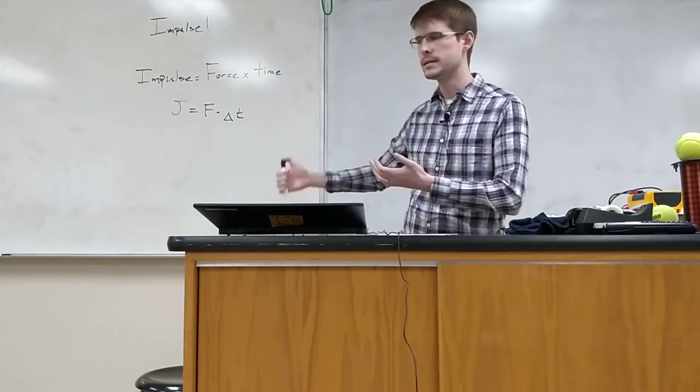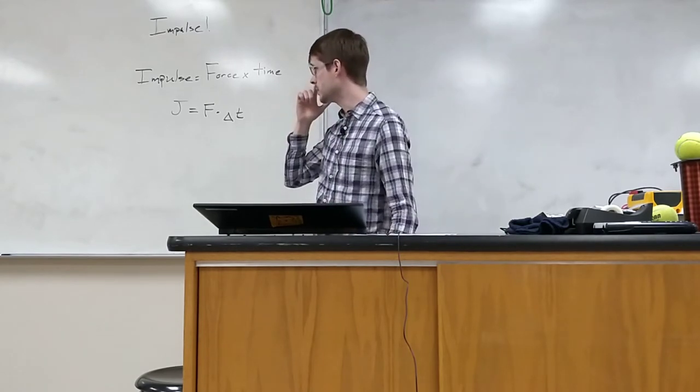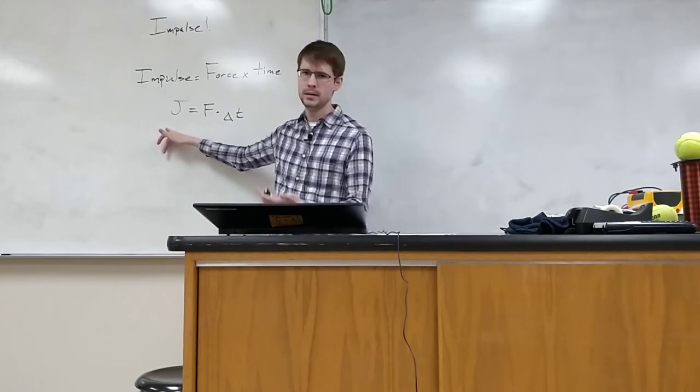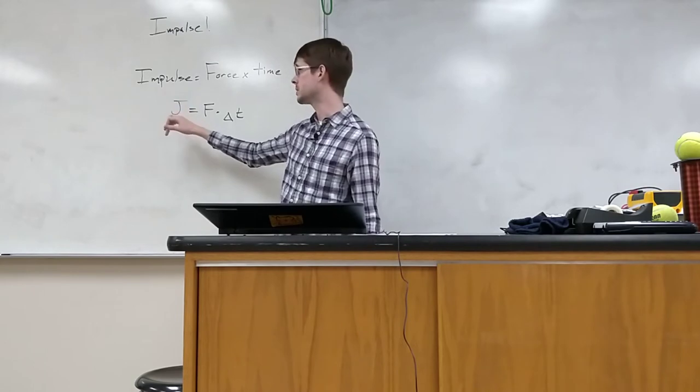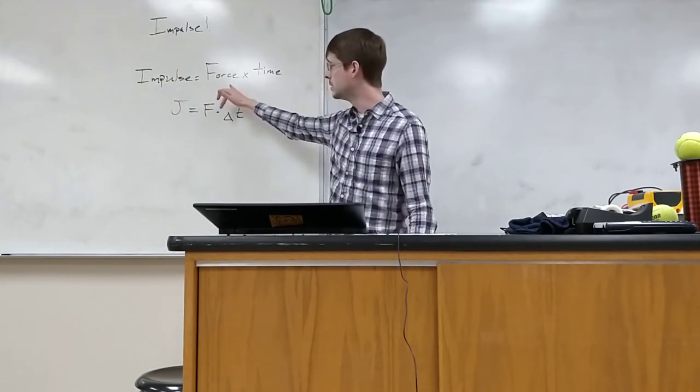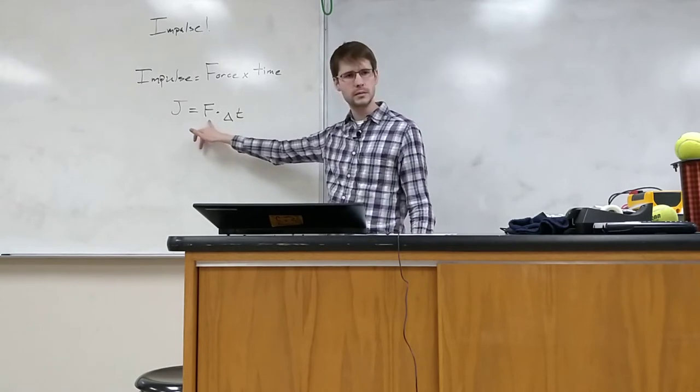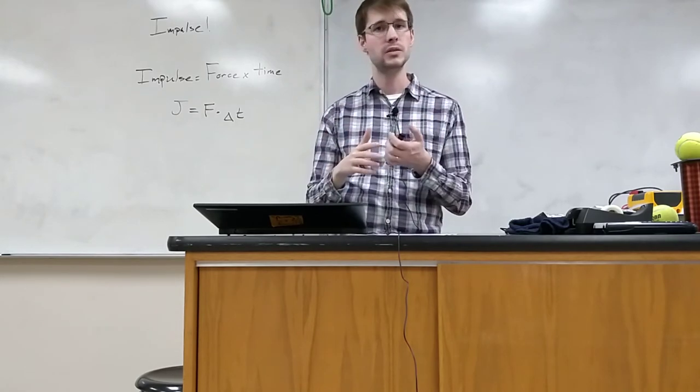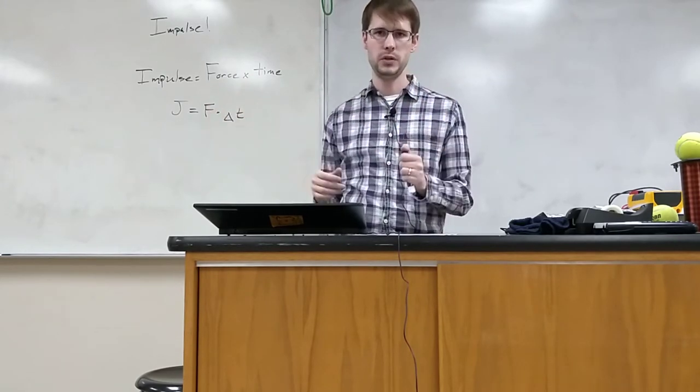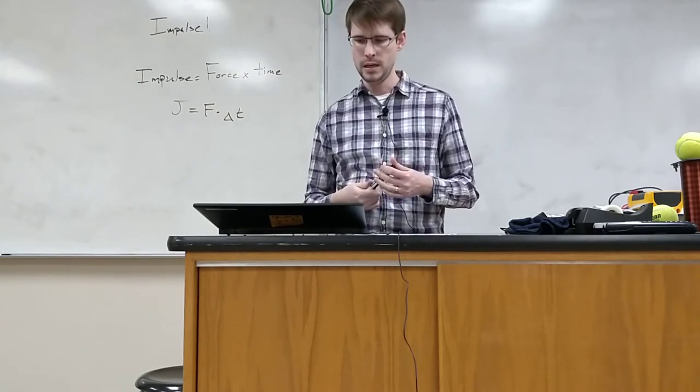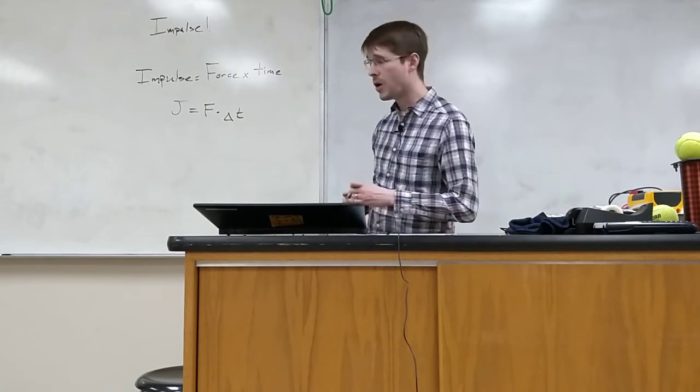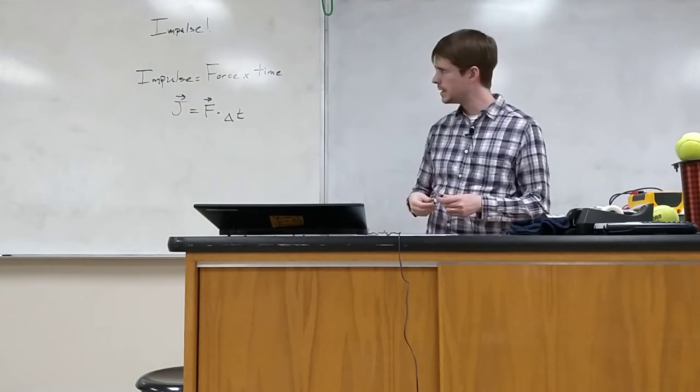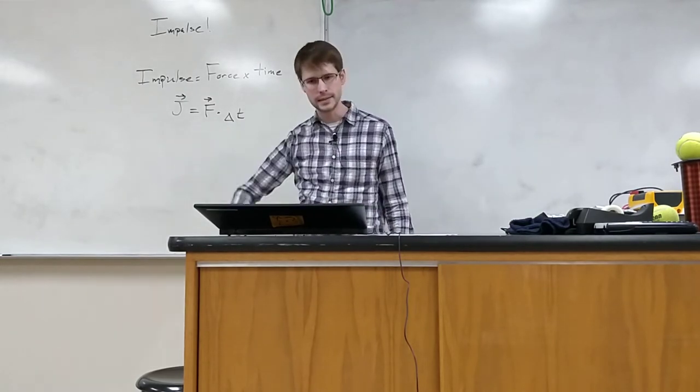Here's our definition written in words and symbols. For impulse, we use capital J. I know, we maybe should have used capital I, but it's been around for a while. Sometimes we call it jimpulse just to remember. Jimpulse equals the force times the time. We write force as capital F, and for time we write delta t as some interval of time. It's not just what time it is when you push, it's how long you were pushing for. Impulse is also a vector. Force times time gives us impulse.